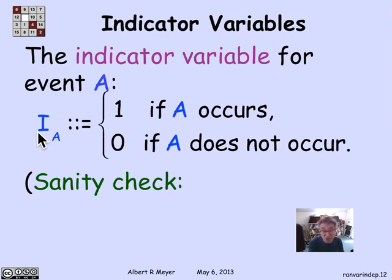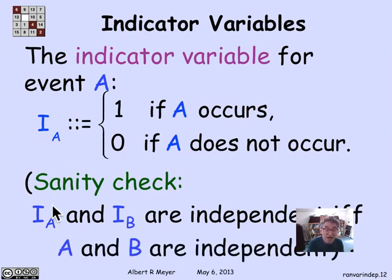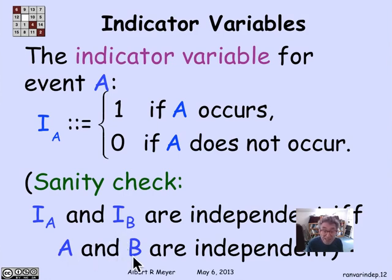With this correspondence, we need a sanity check. We've defined independence for random variables one way and independence for events another way. If the correspondence between events and indicator variables is to make sense, two events should be independent if and only if their indicator variables are independent — that is, I_A and I_B are independent iff events A and B are independent. This is a three-line proof and good practice to verify using both definitions.